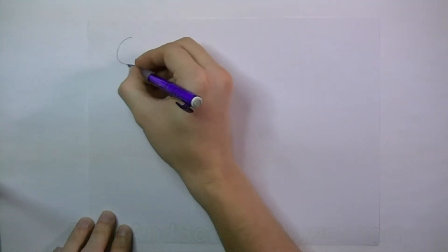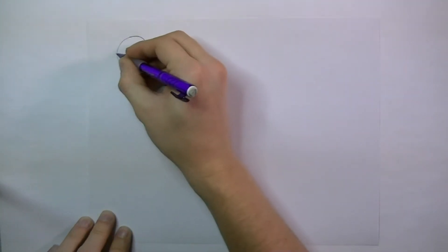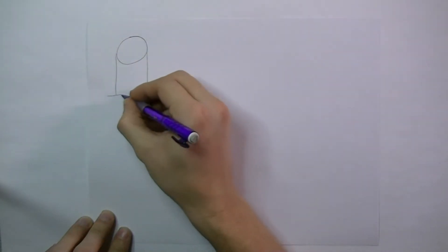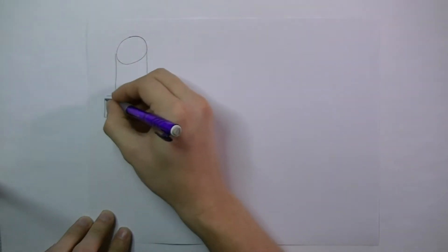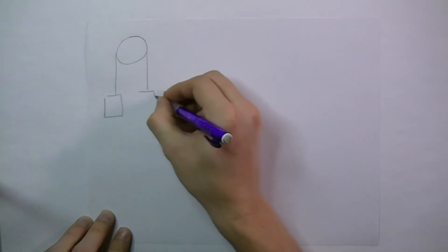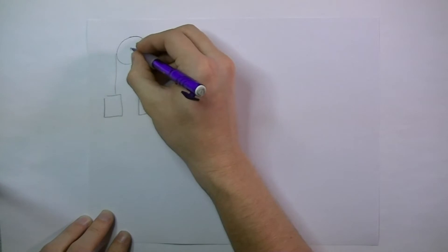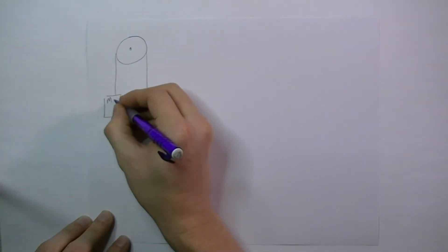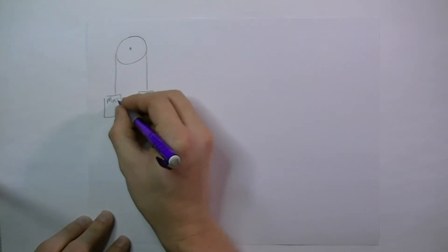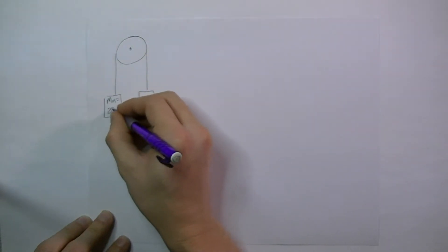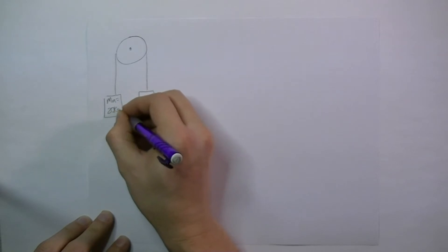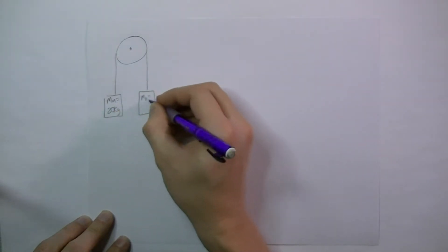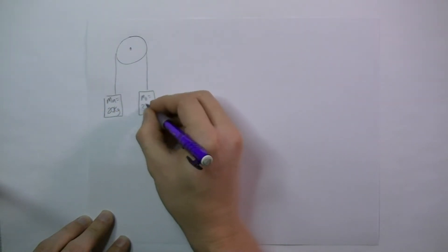Let's look at another Atwood machine — same as before: a pulley with a rope and two masses. This time we're going to say mass A is 20 kilograms and mass B is 3 kilograms.